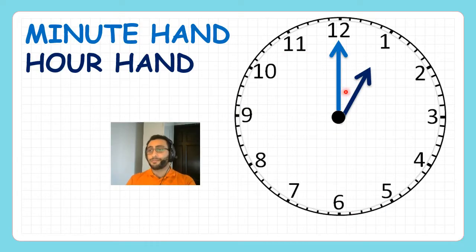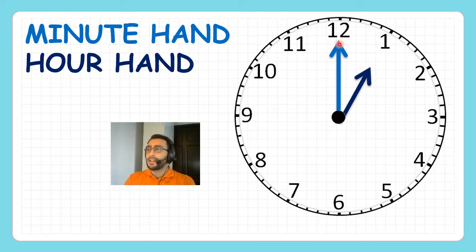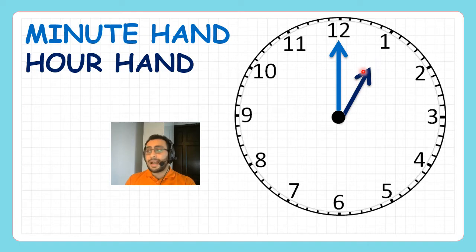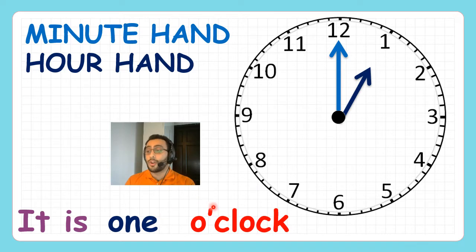This is the minute hand, this is the hour hand. The minute hand is pointing at 12, which means zero minutes, but the hour hand is pointing at one, which means it is one o'clock.